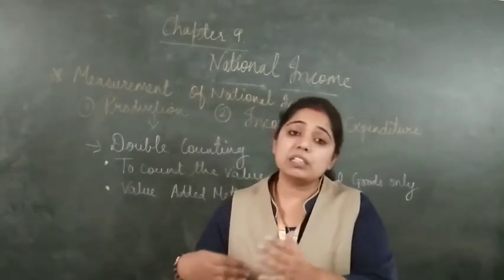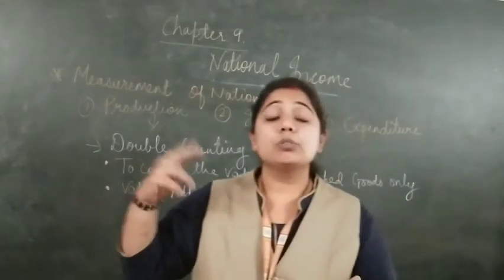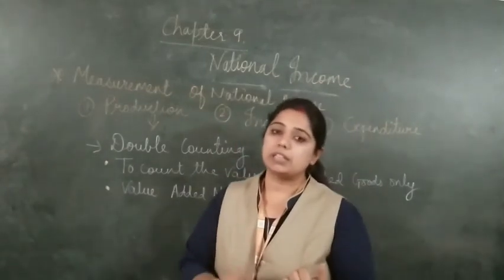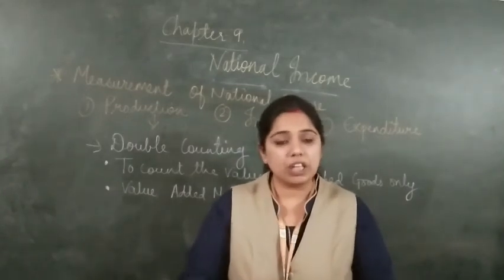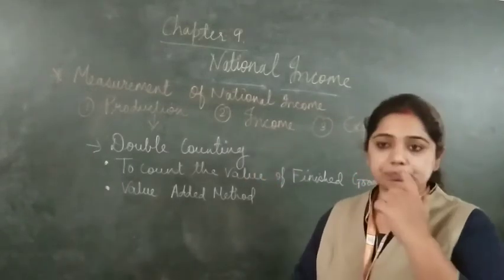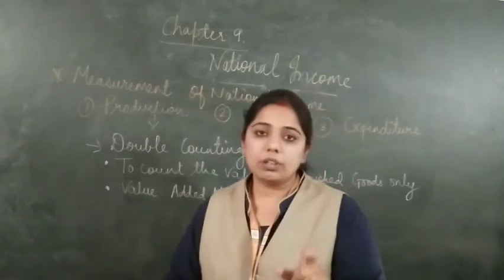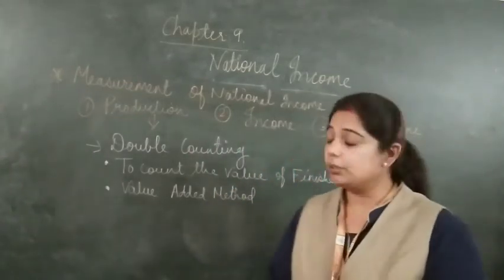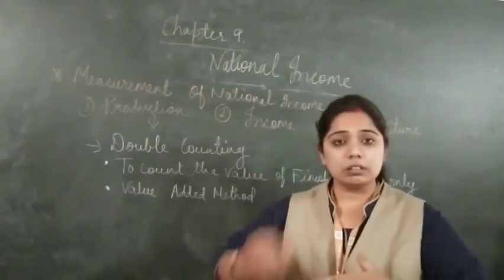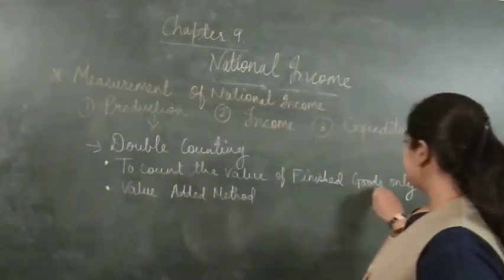That value which we are adding again and again should be removed from the national income. If we need to avoid double counting, there are two ways: first, to count only the value of the finished goods; and second, the value added method.